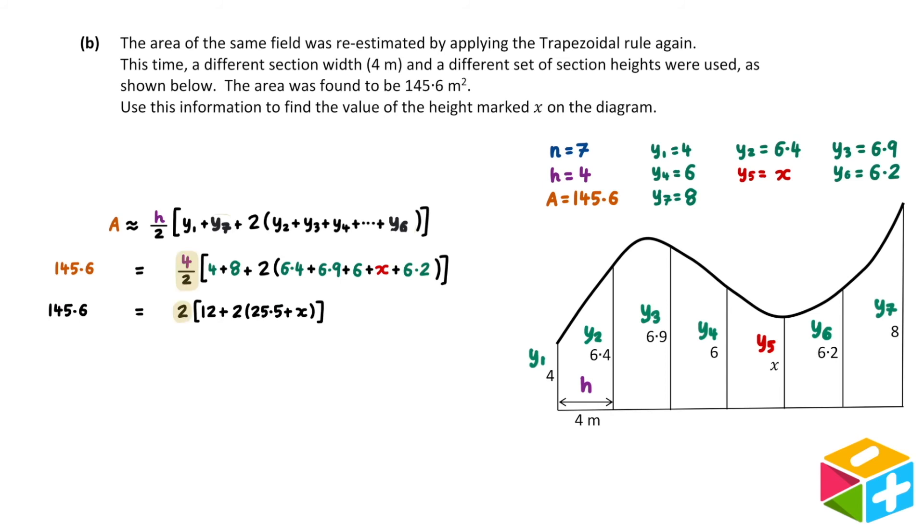4 divided by 2 is 2, 4 plus 8 is 12, and when we add together all the numbers in the bracket with the x, we get 25.5.